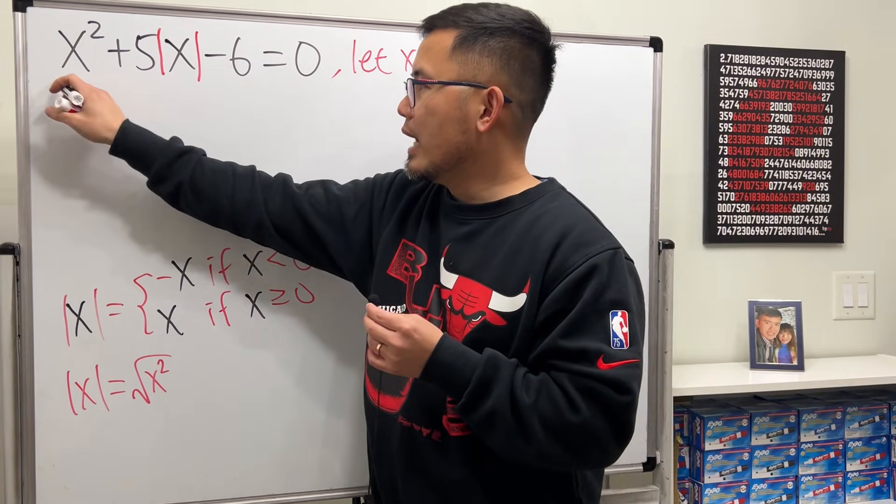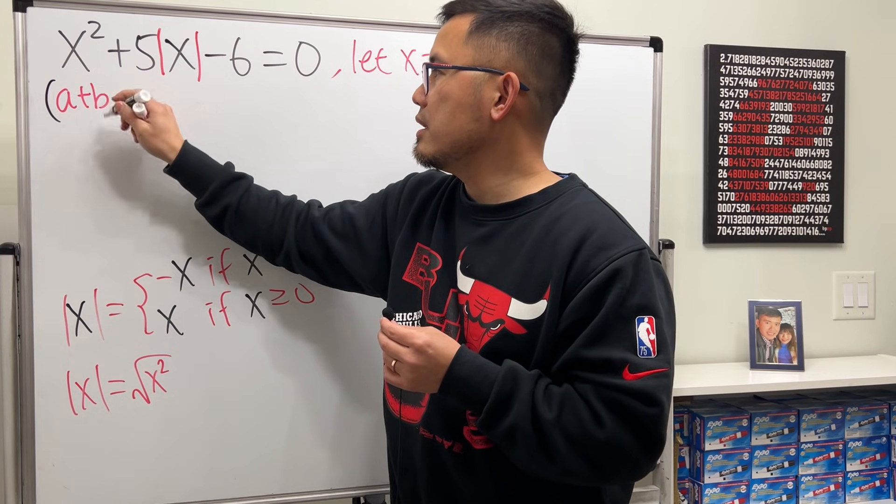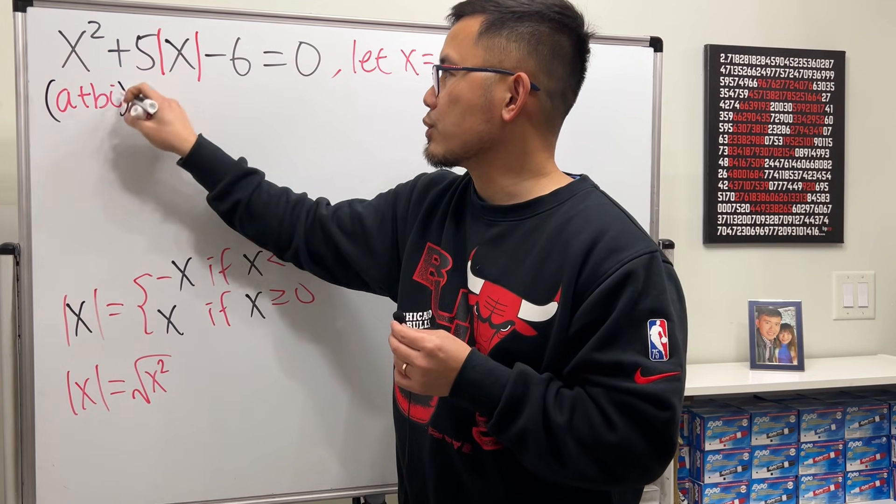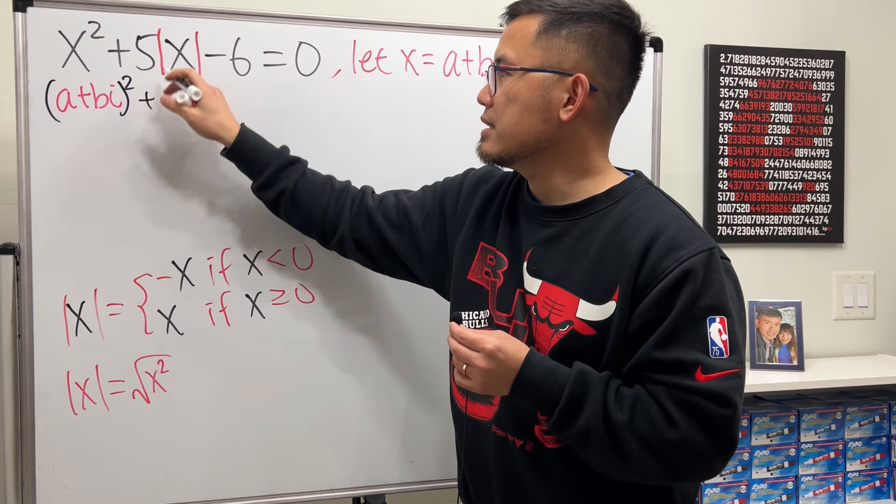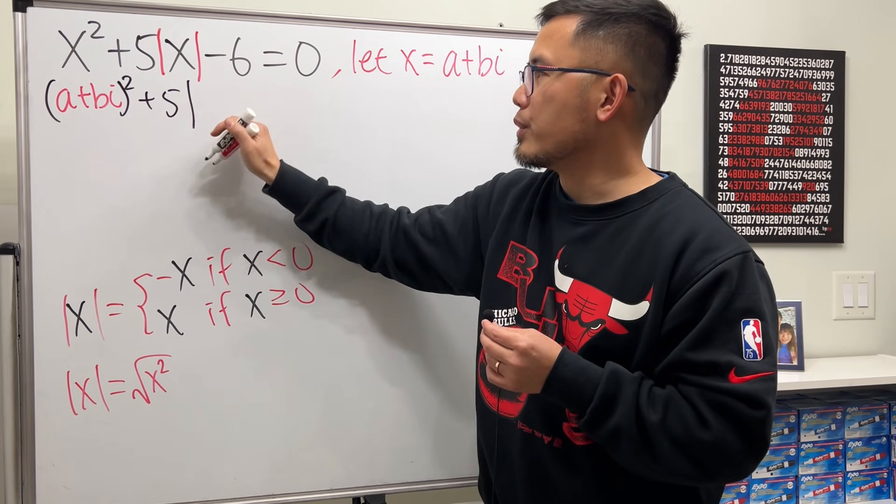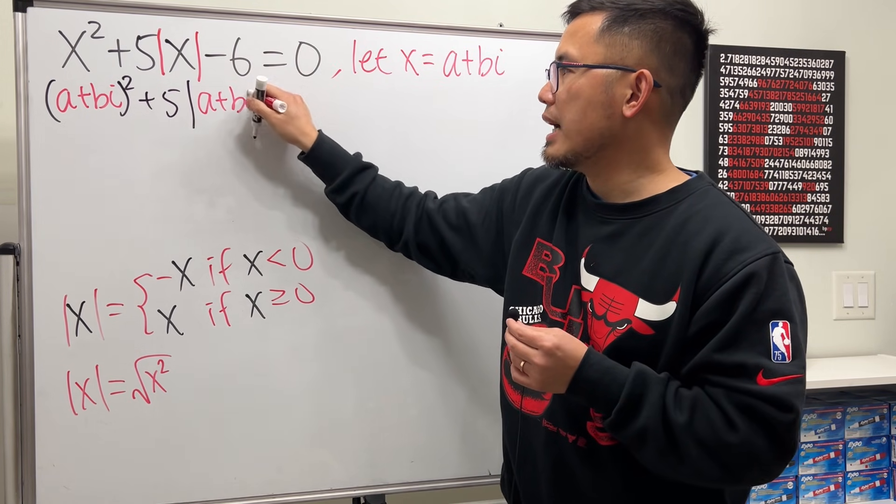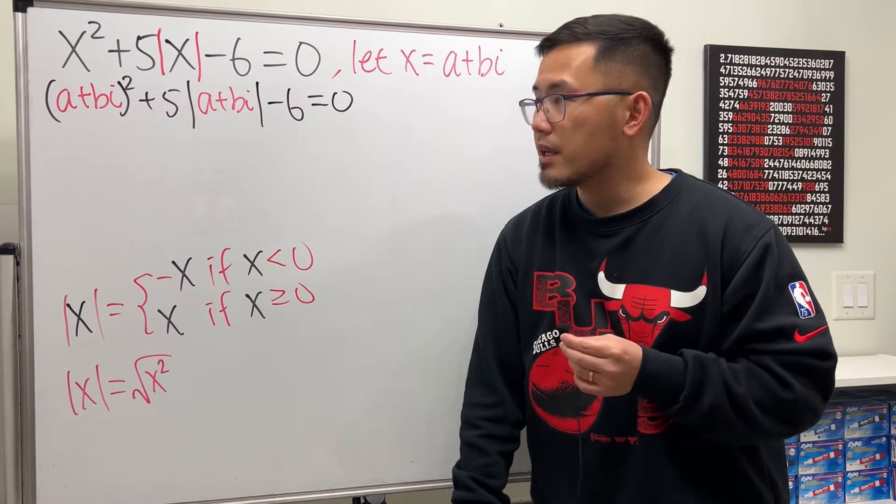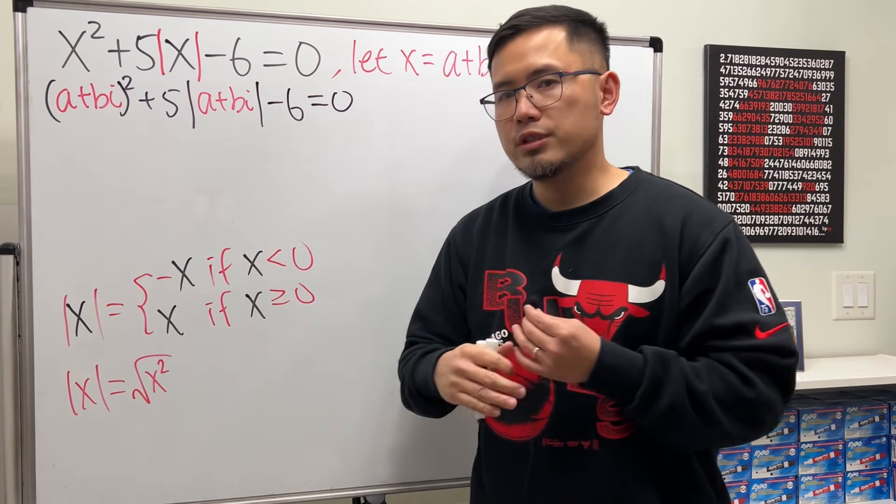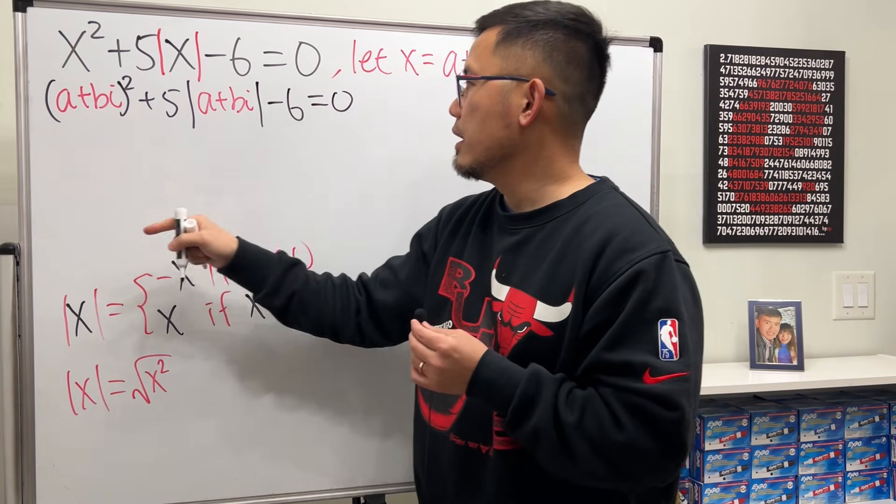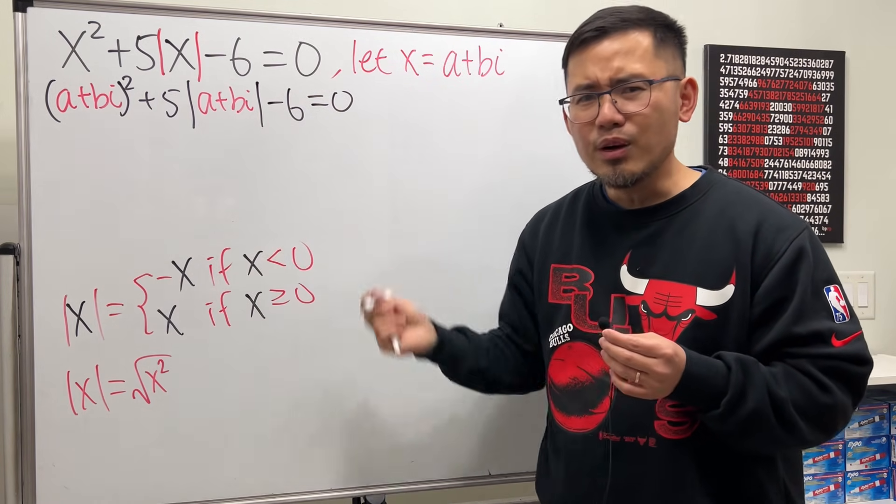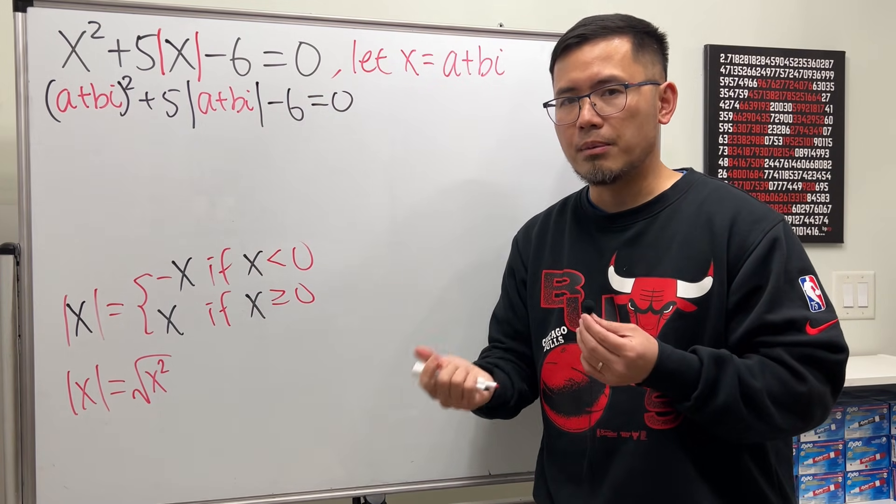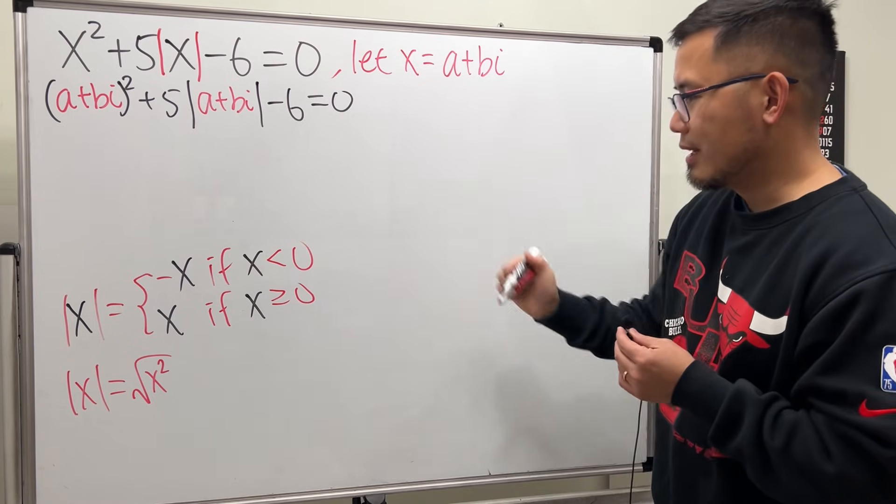So I'm just going to put them right there. Right here, we have x squared, which is a plus bi, and then I have to square that, and then plus five absolute value, a plus bi, and then minus six, that's equal to zero. So for this part, we can just expand it, no worries. And for this part, how do we take care of absolute value of a complex number, though? Well, let me go over that real quick.